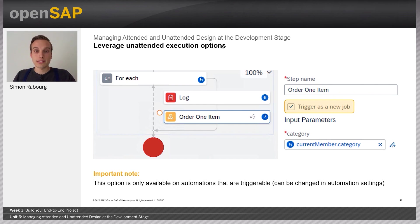Please note that this is only available for triggerable automations. That means that when designing your sub automation, you need to toggle on the triggerable option. You can also update it from the automation settings available on the upper right part of the automation editor.